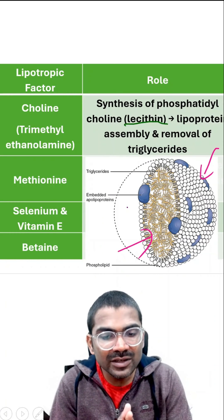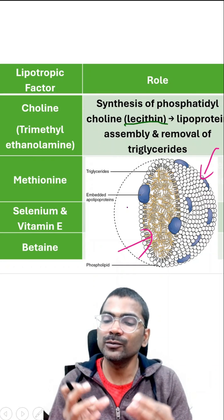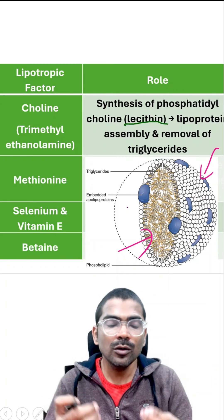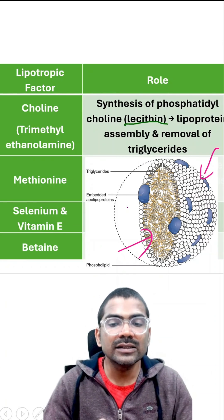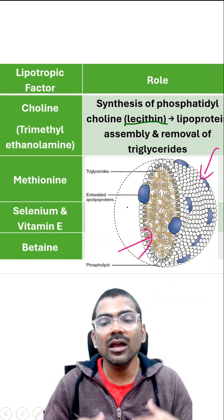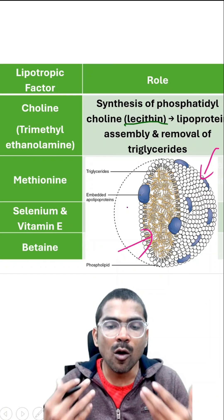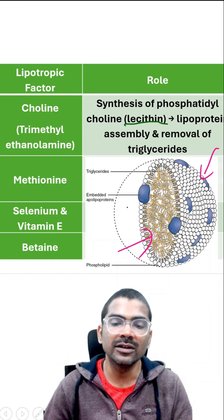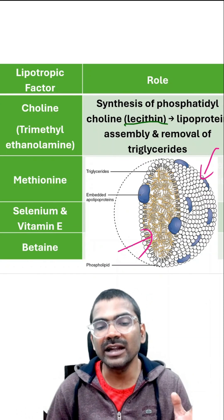If choline is deficient, phospholipids cannot be synthesized. So triglycerides cannot be exported out of the liver and they accumulate in the liver, causing fatty liver.